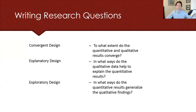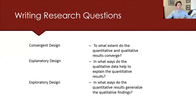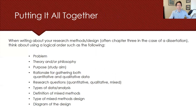Related to the purpose statement is writing clear and comprehensible research questions. For a convergent design, an example could be: 'To what extent did the quantitative and qualitative research converge?' For an explanatory design: 'In what ways do qualitative data help explain the quantitative results?' And for an exploratory study: 'In what ways do the quantitative results generalize the qualitative findings?'